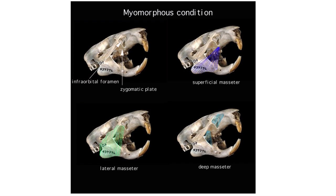The next condition is the myomorphous condition, which features a zygomatic plate as well for insertion of the lateral masseter muscle. But they also have an enlarged infraorbital foramen, or hole, for not only passage of nerves and blood vessels, but the deep or medial masseter muscle, which travels through this opening to insert in the skull. This condition is found in mice, rats, voles, hamsters, gerbils, and dormice. The group has a fossil record extending back to the late Eocene.